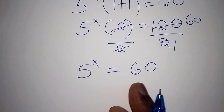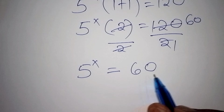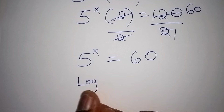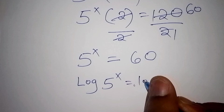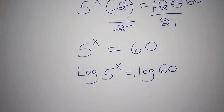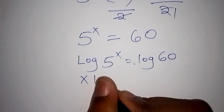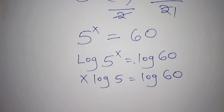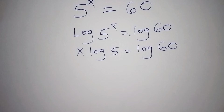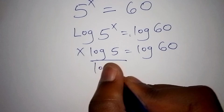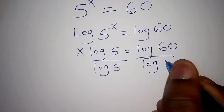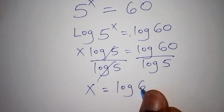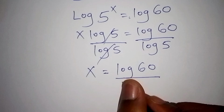Now we have 5 to the power of x equals 60. It is difficult for us to express 60 as a power of 5, so we shall introduce logarithms. We take the log of both sides: log of 5 to the power of x equals log of 60. Using the log power rule, x times log 5 equals log 60. We then divide both sides by log 5, so x equals log 60 all over log 5.